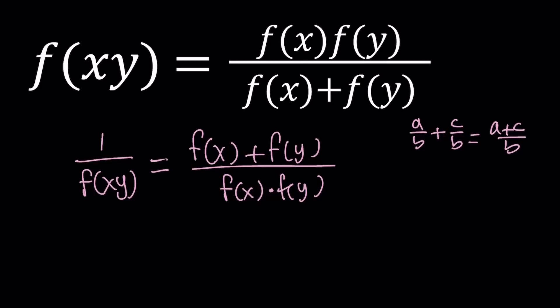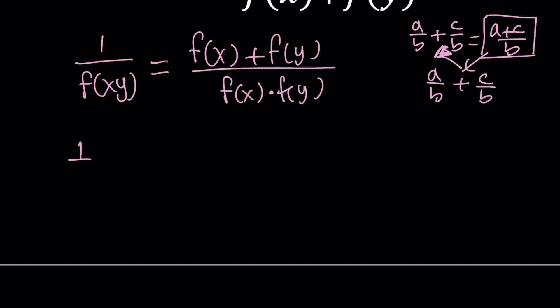And if you don't have the same denominator you can always make one. So whenever you have a sum in the numerator you can actually split it up and write it as a over b plus c over b which gives you the original expression. Make sense? So that's what we're going to do on the right hand side of this equation.